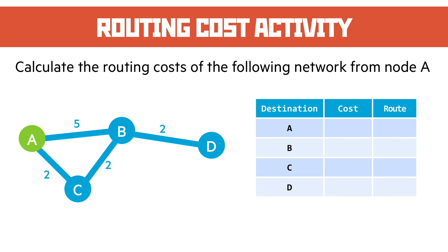Here's a simple routing cost activity, looking at and identifying the cost from node A to each of the other nodes. Node A gets a cost of 0 because it doesn't cost anything to get to itself. Node B, the shortest route, is by going through node C, which gives a cost of 4. Node C, directly from node A, gives a cost of 2. And node D, going via node B, gives a total cost of 6.